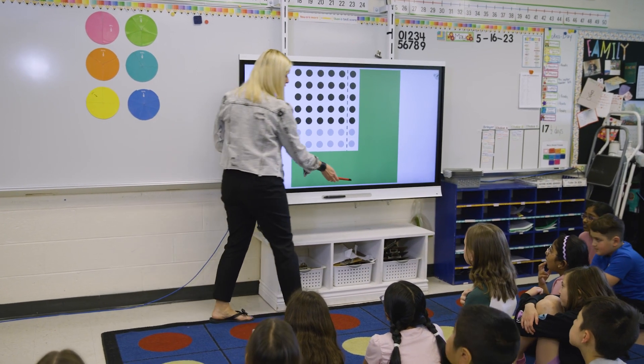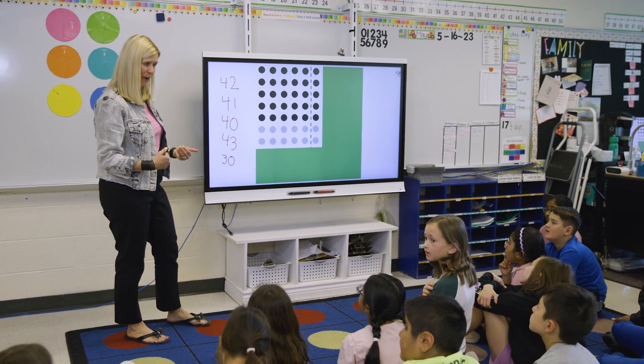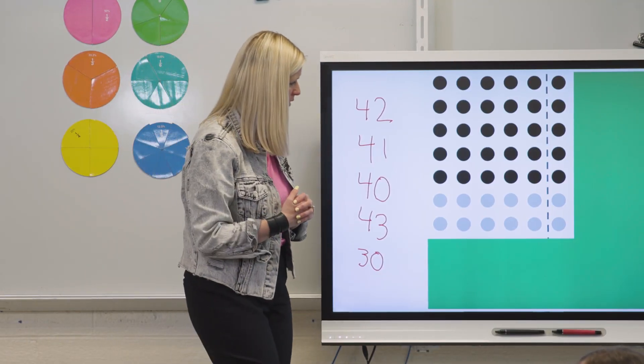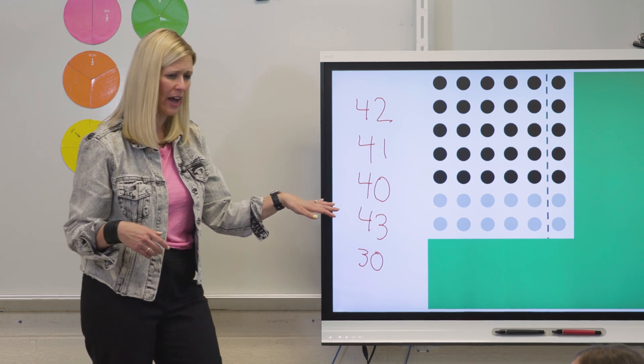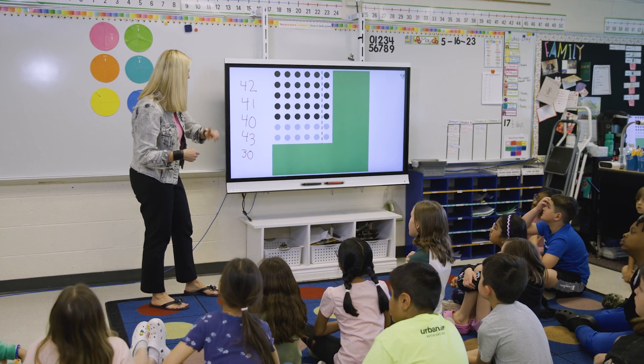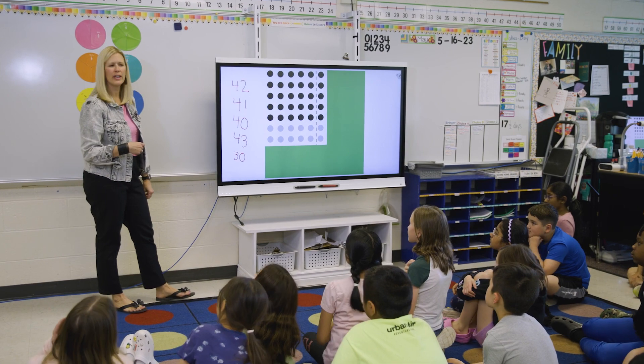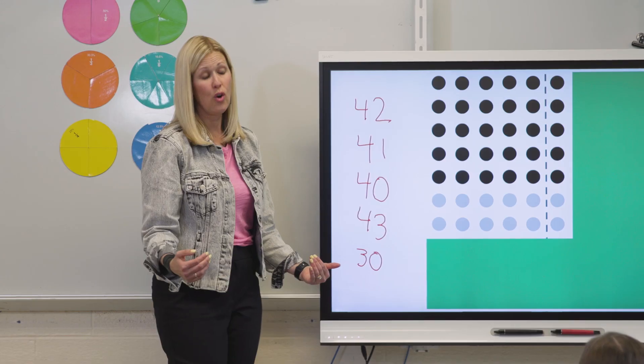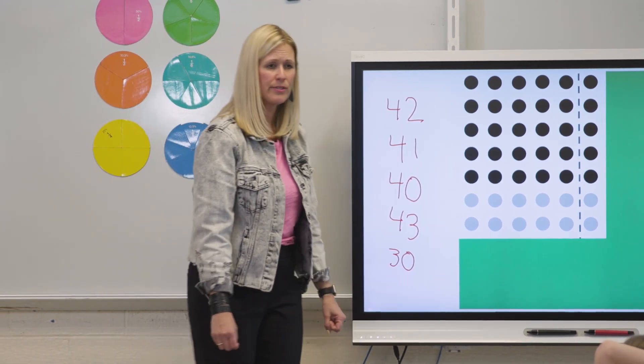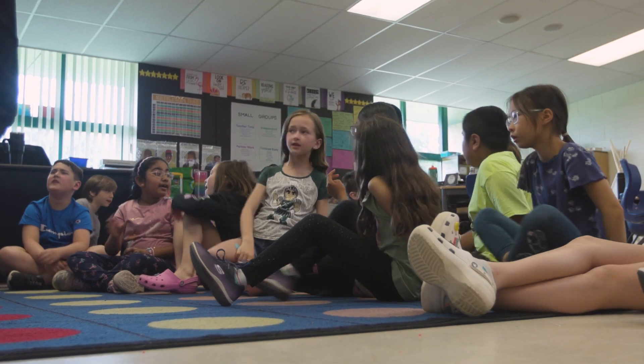So one thing that's really important when we talk about math is sometimes we have different answers. And in talking about it, we can figure out the correct one. And then we can really talk about why it is what it is. So we're going to do something called challenge or defend. So what you're going to do is you're going to pick one of these and you're going to say, I'm going to challenge 43. I know the answer cannot be 43 and this is why. Or you're going to pick one and you're going to defend it and you're going to say, I know that answer is 43 and this is why. Okay, turn and talk to your partner again. Challenge or defend?